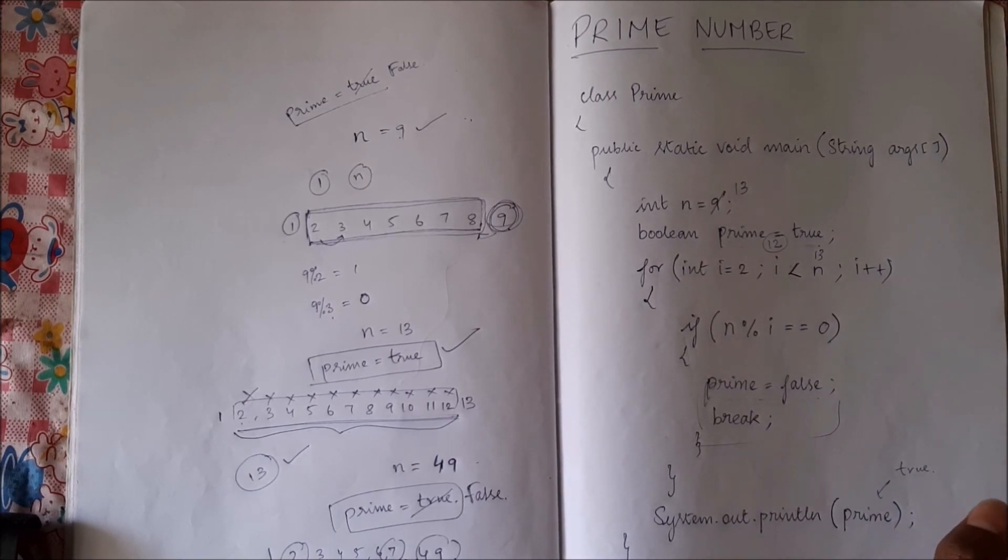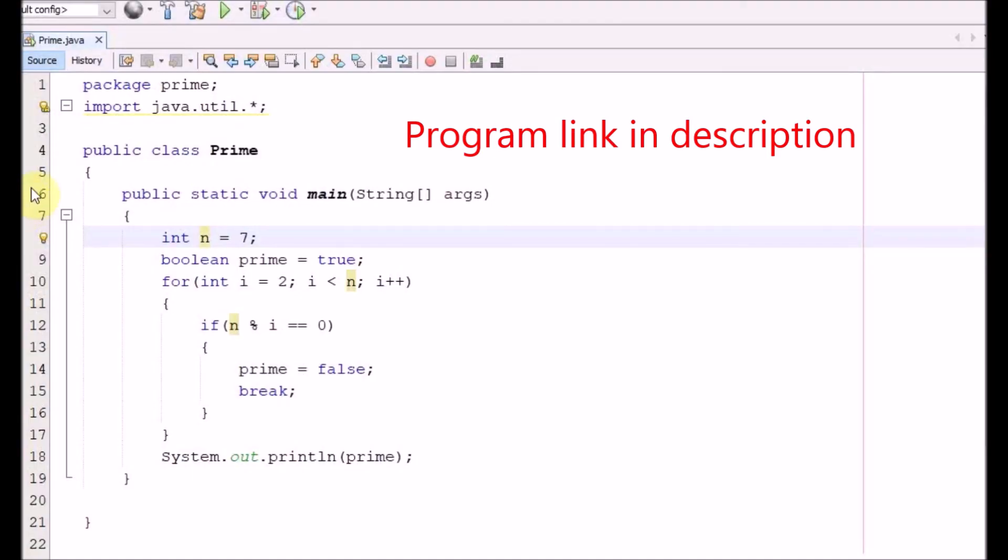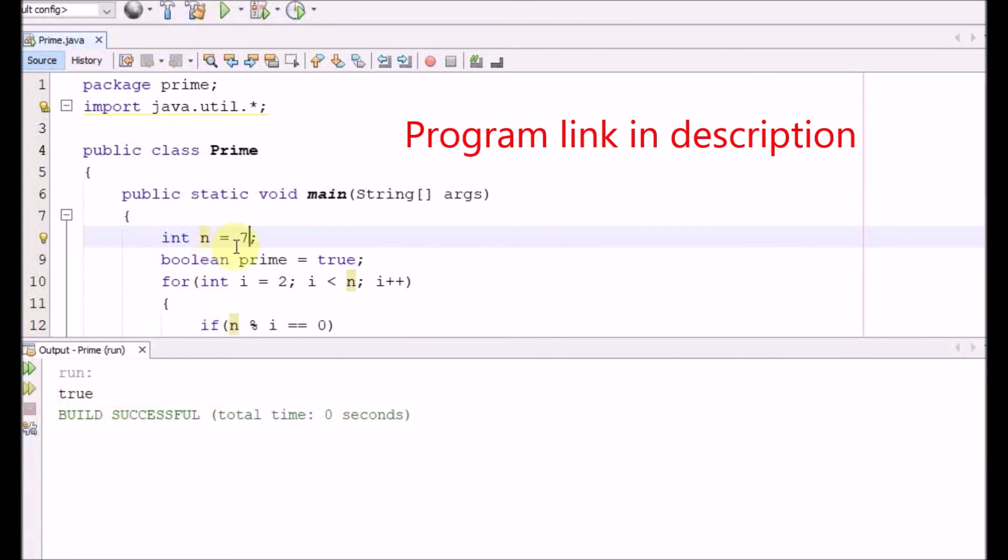Let's move to the computer and run this program. So here let me run this program and show you. So our n is 7 which is a prime number. Let's see if we get an answer as true. So it prints true.